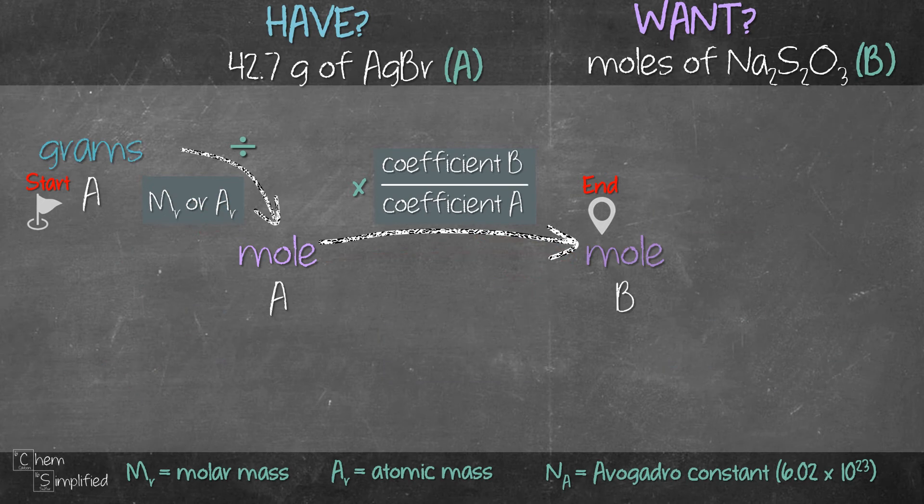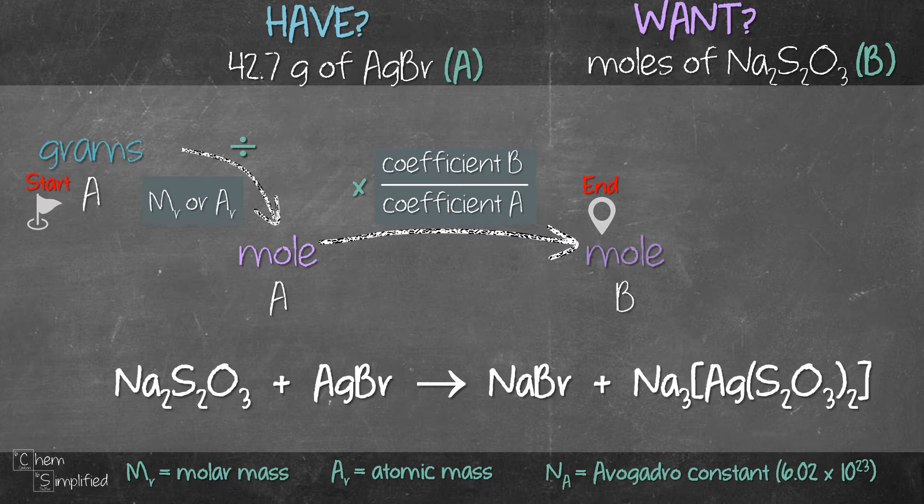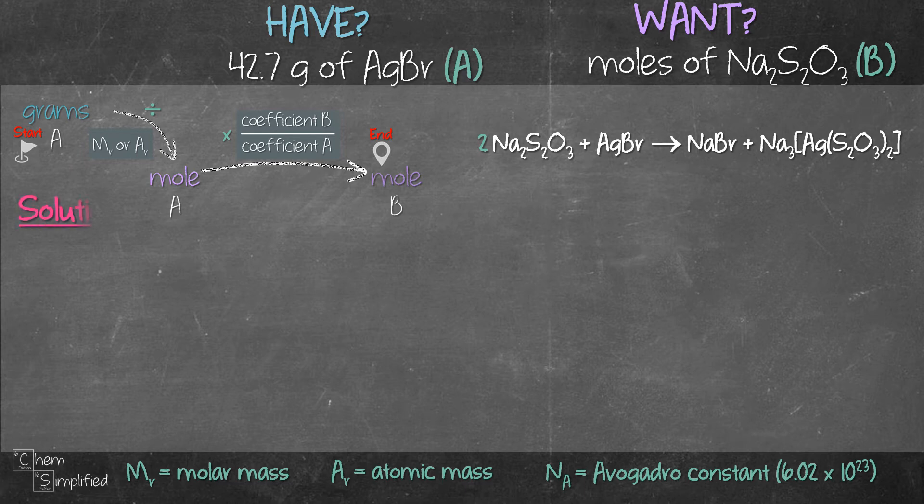Before we begin setting up to solve the question, we need to make sure that we have a balanced equation. So if you need a refresher on balancing equations, I'll link a video on the top. So it looks like we can easily balance this equation by placing a 2 in front of Na2S2O3. With that, we are now ready to set up the solution.